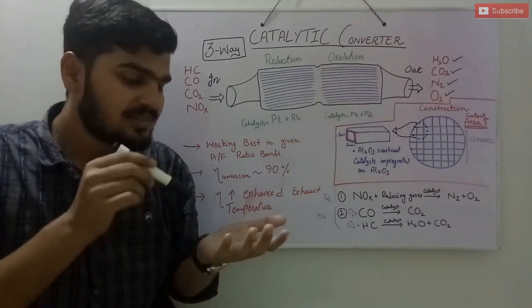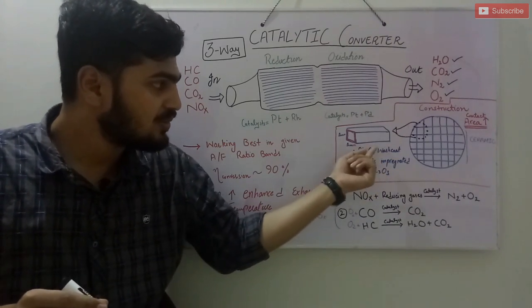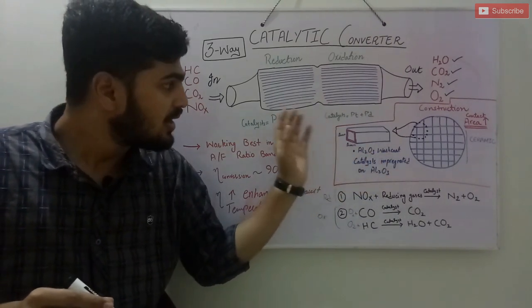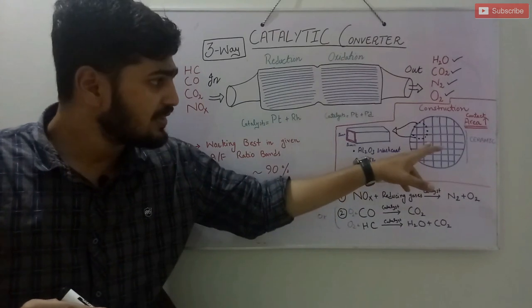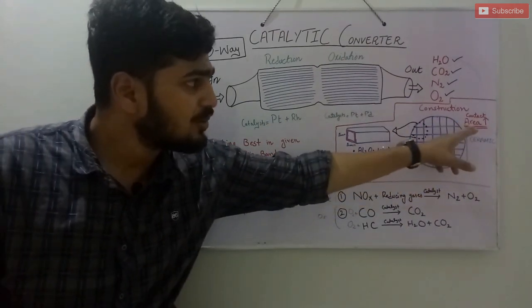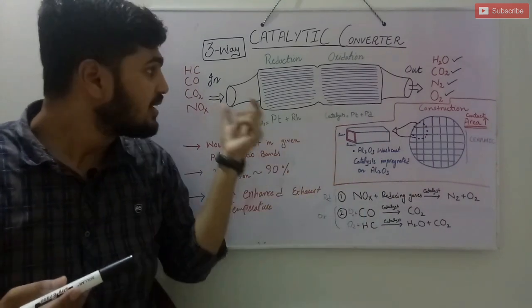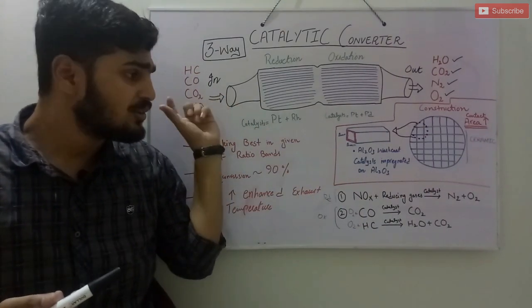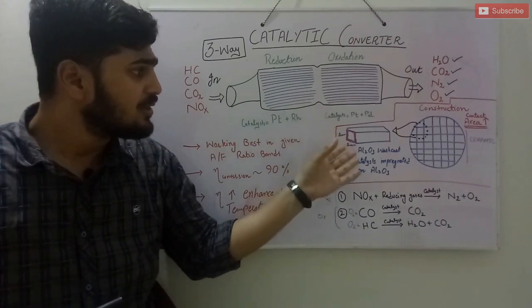These catalysts are impregnated on the wash coat of alumina in every passageway. These passageways are here to increase the contact area so that each and every molecule of the exhaust gas can be reduced or oxidized completely within the catalytic converter.